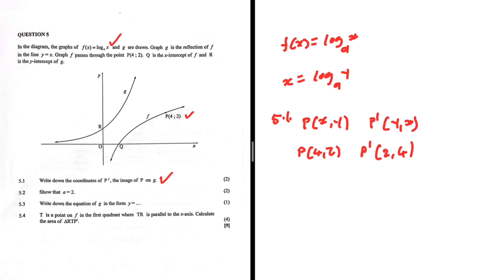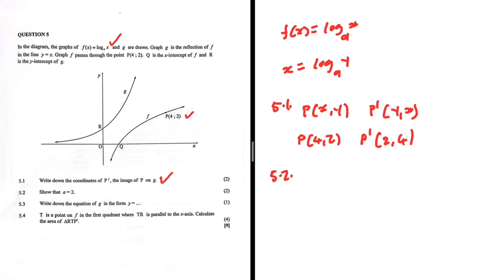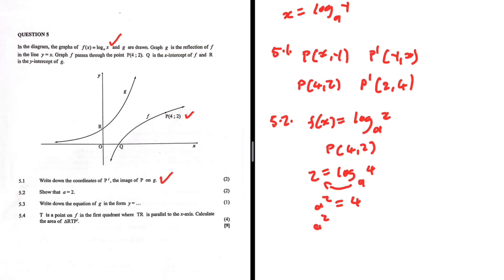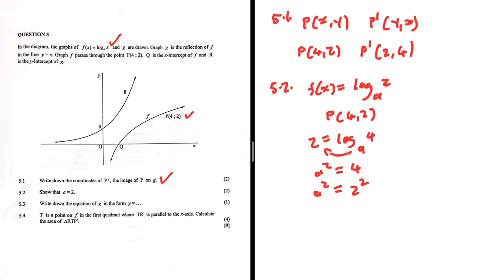Question 5.2: show that a = 2. We have f(x) = log_a(x). We can substitute any point on f. Using point P with coordinates (4, 2): the y value is 2 and the x value is 4. Applying log rules gives a² = 4, which equals 2², so dropping the exponents gives a = 2. We have fully shown that a = 2.